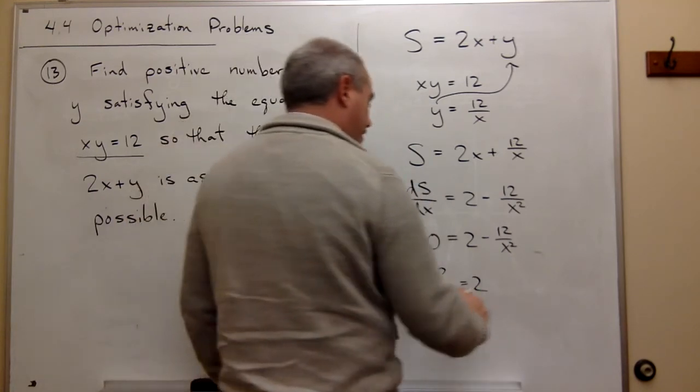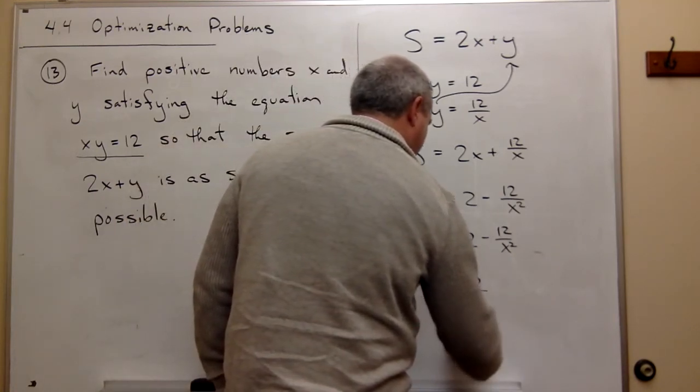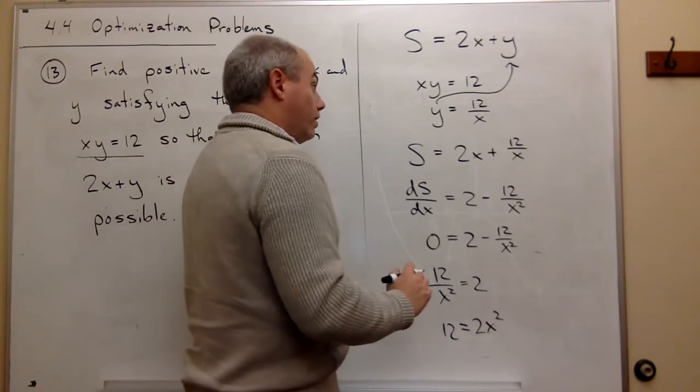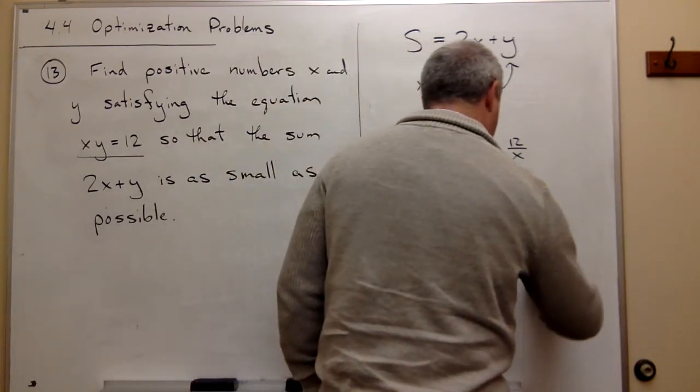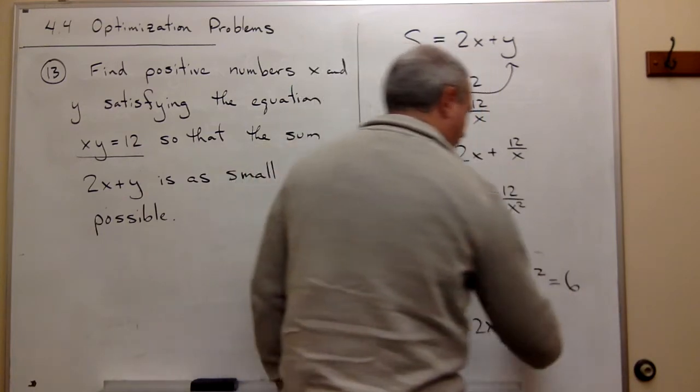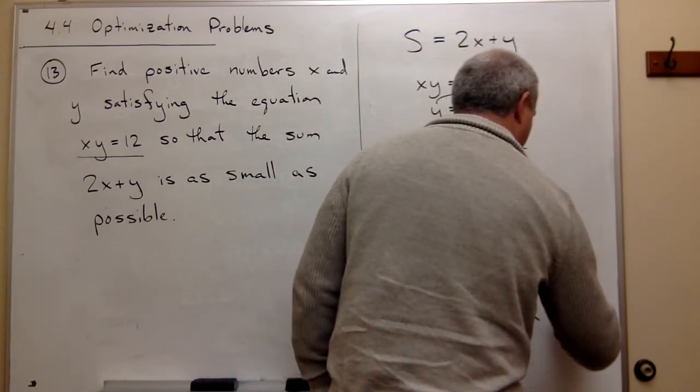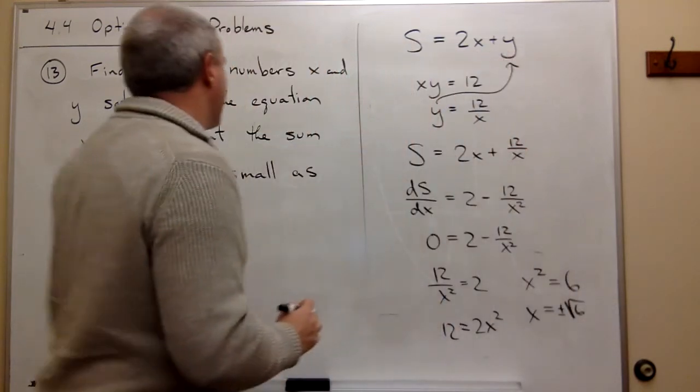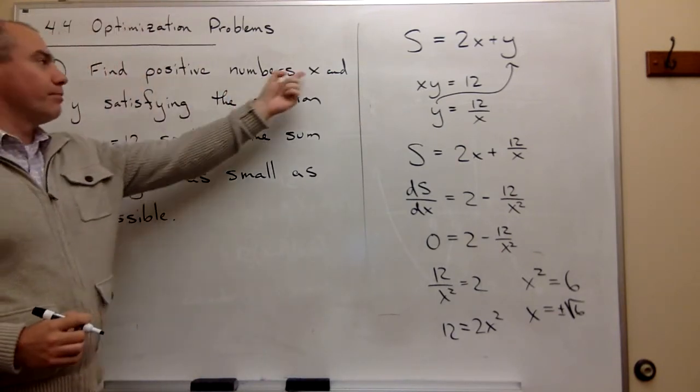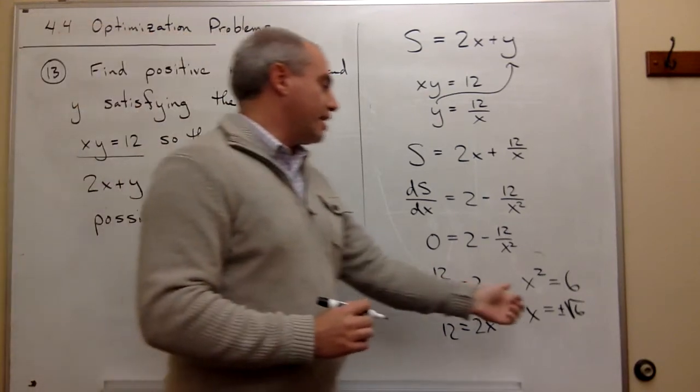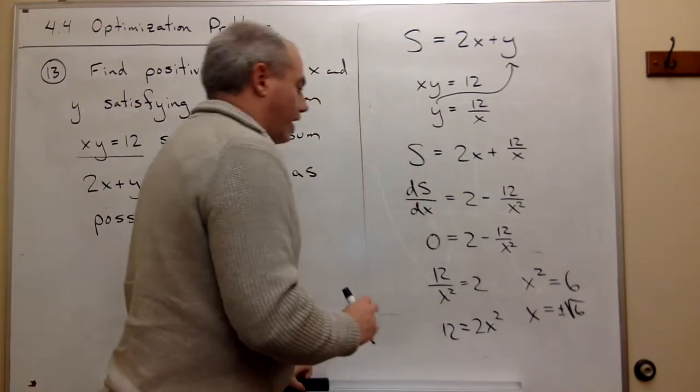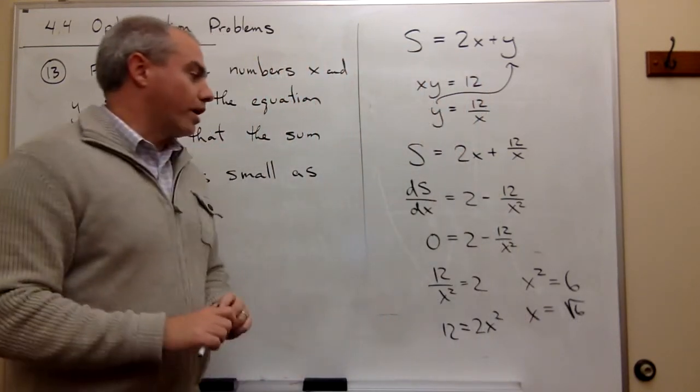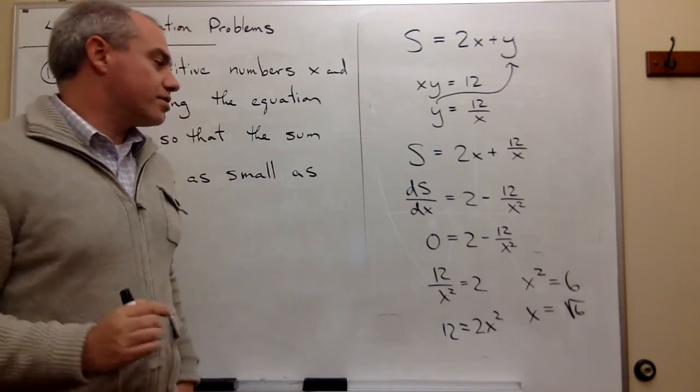And I get that 12 is equal to 2x², so x² is equal to 6, and x would be equal to ±√6. Now remember, go back to the beginning of the problem and it says find positive numbers x and y, so I'm not interested in any negative number for x, so I can just get rid of the negative and I just get that x must be the square root of 6.